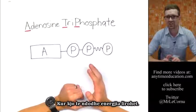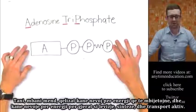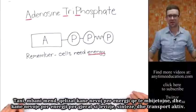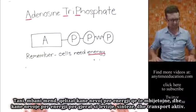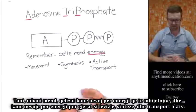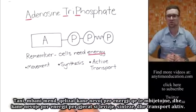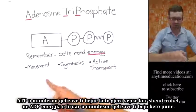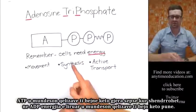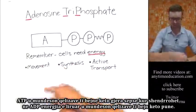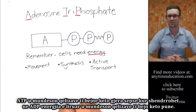When that happens, energy is released. Now remember, cells need energy to survive, and they need energy for things like movement, synthesis, and active transport. So ATP enables cells to do those things because when it's converted into ADP, the energy that's released can allow cells to do those jobs.